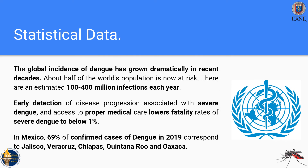Statistically, the global incidence of dengue has grown dramatically in recent decades, with an estimated 100 to 400 million infections each year. Early detection of severe dengue and access to proper medical care lowers fatality rates of severe dengue to below one percent. In Mexico, 69 percent of confirmed dengue cases in 2019 correspond to specific states.